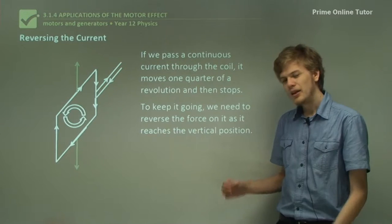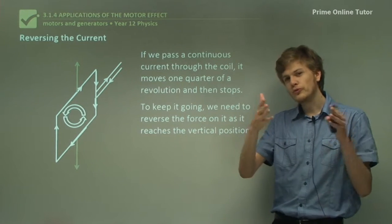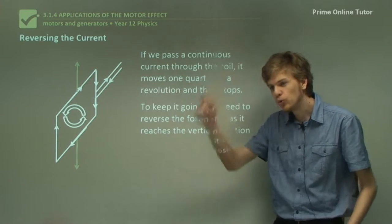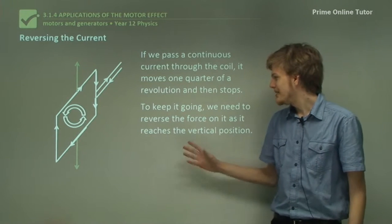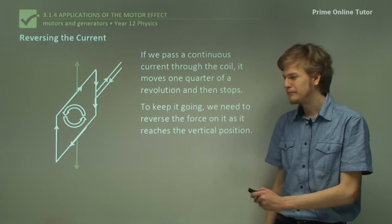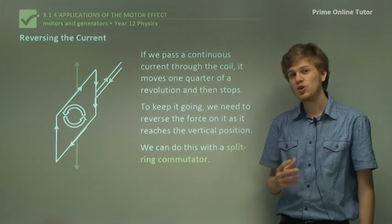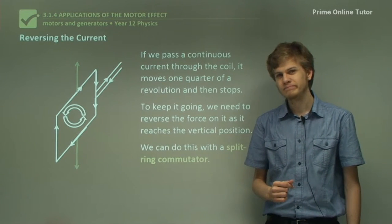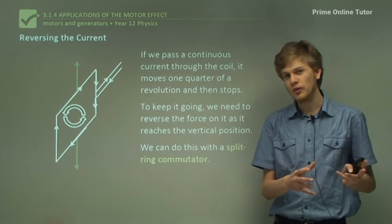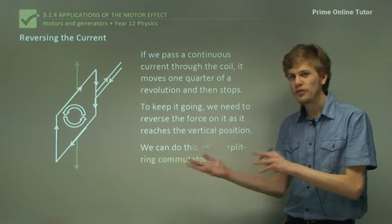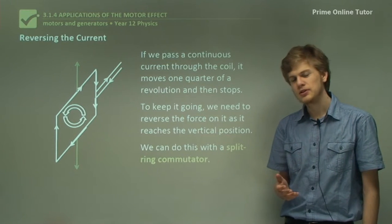So just as the wire gets to the top, we need to make the force that's currently pulling it up start pulling it down instead. That means that once it's past its vertical position, its momentum will carry it forward a bit, and then it will be pulled back around the other way. And this is how we construct the electric motor — all we need now is a way of reversing the current. And we can reverse the current with a device called a split-ring commutator. A commutator is something that commutes electric current from one thing to another, and a split-ring has to do with the shape of this particular commutator.